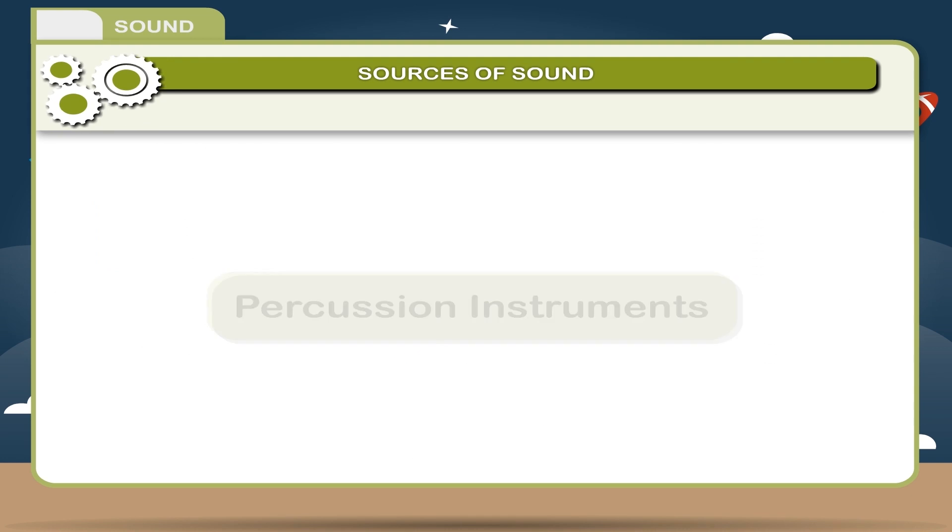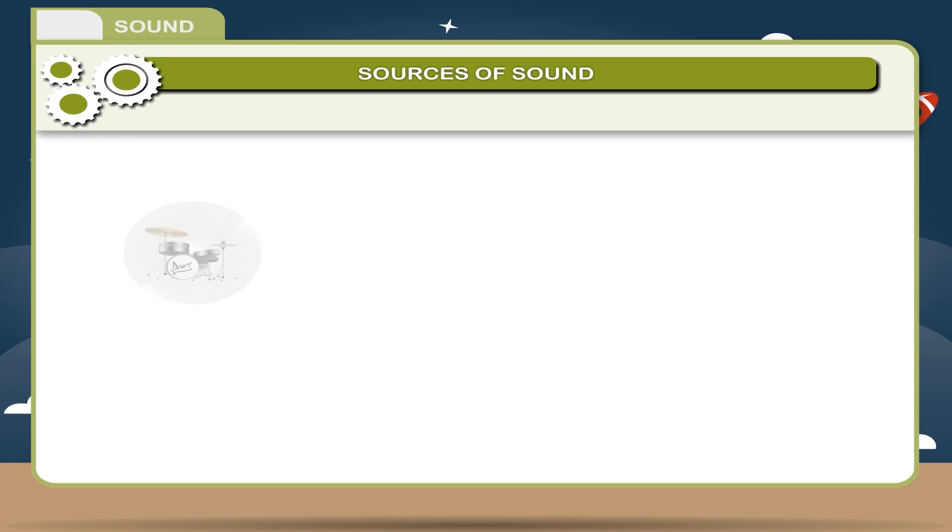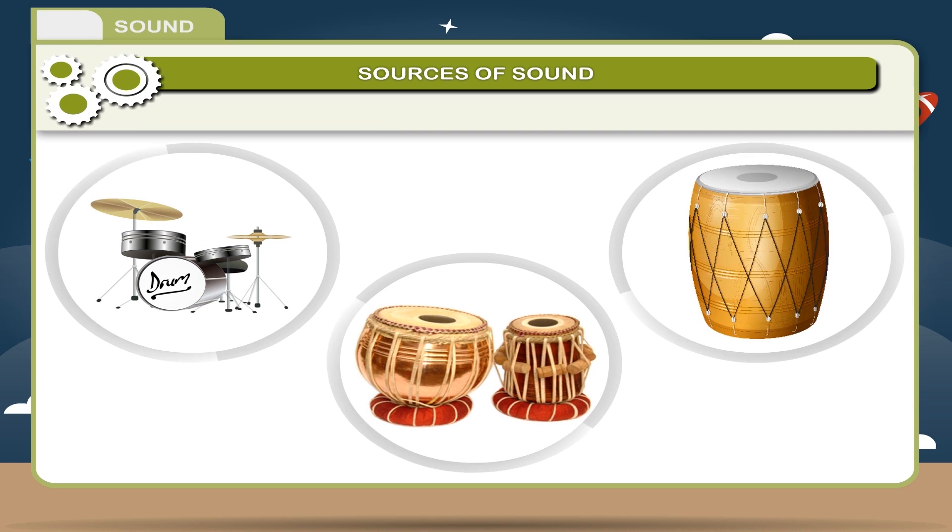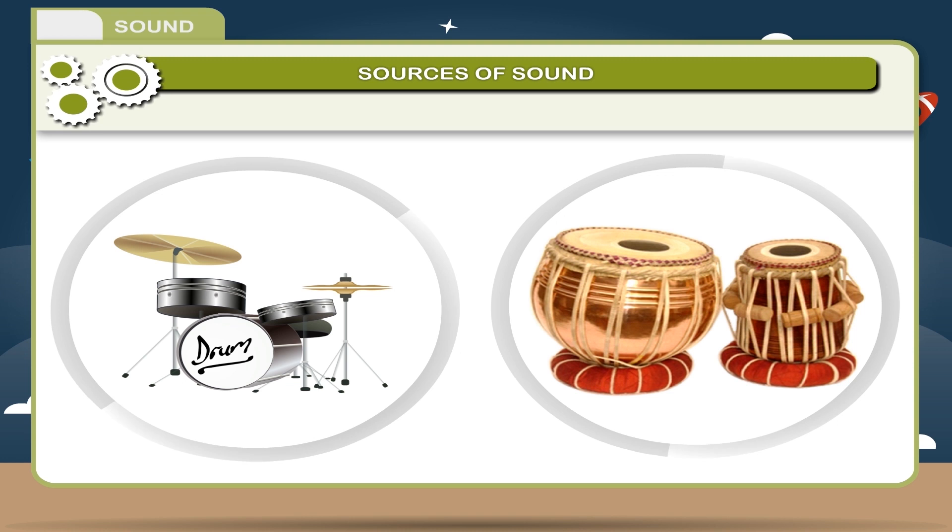Percussion Instruments. In these instruments, a membrane is stretched tightly over hollow wooden frame. When the membrane is beaten, it vibrates and produces a sound. Examples: drum kit, tabla, dholak. So the sound of a drum or tabla is produced by the vibrations of its skin membrane when struck.